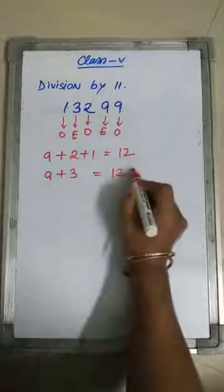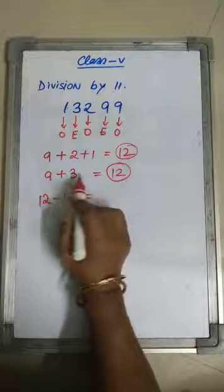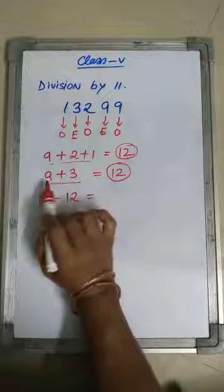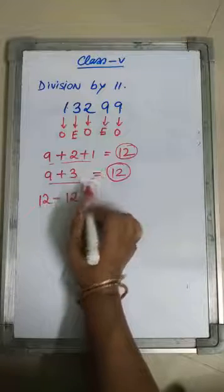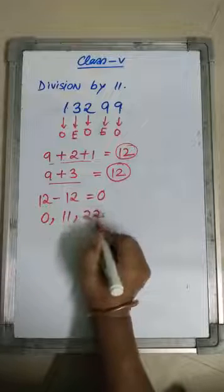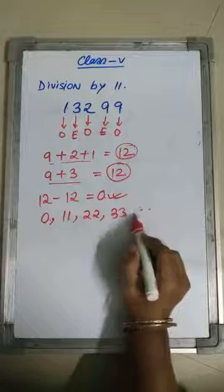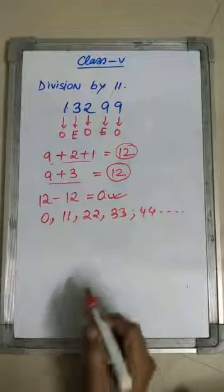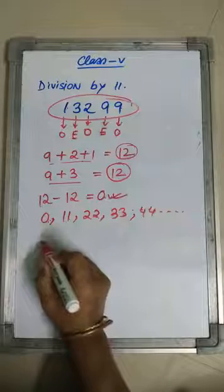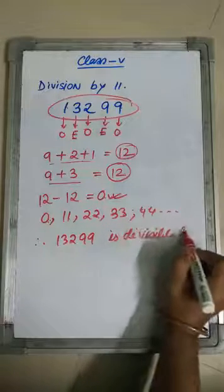Now, what shall we do? We shall subtract: sum of even position digits minus sum of odd position digits. So 12 minus 12 will be 0. If we have 0, 11, 22, 33, 44 — that is, multiples of 11 — then the given number is divisible by 11. We got 0, therefore 1, 3, 2, 9, 9 is divisible by 11.